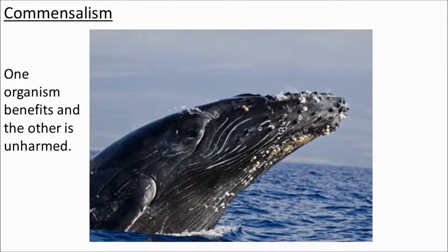Another relationship: commensalism. This is a class of relationship between two organisms where one organism benefits without affecting the other at all. A good example is barnacles living on a whale — they get moved to new food sources as the whale swims around, but the whale itself is not affected in any way. That's commensalism.